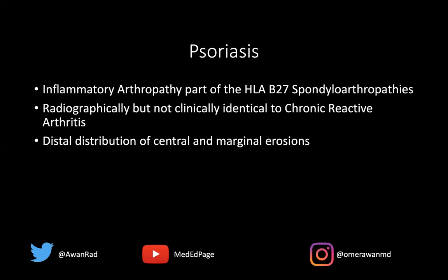There's often a distal distribution of central and marginal erosions in psoriatic arthropathy. It's interesting because you can have a row or a ray distribution. A row distribution means all the PIP joints in the hand are involved and no other joint is involved. A ray distribution means all the joints of a specific finger are involved — for example, the MCP, PIP, and DIP of the index finger — but no other joints. That's a scenario unique to psoriatic arthropathy.